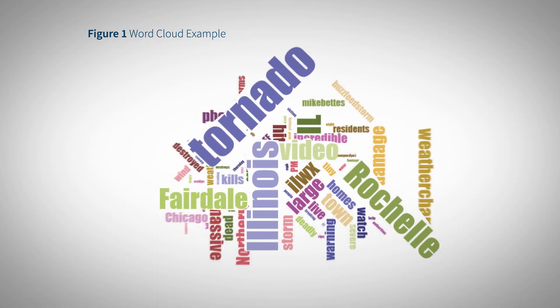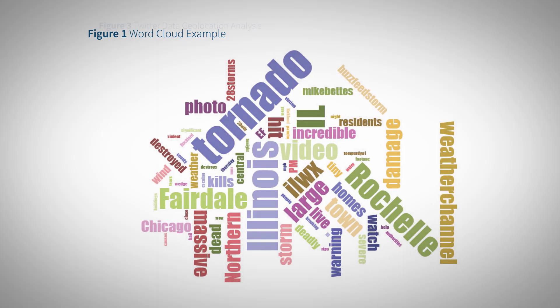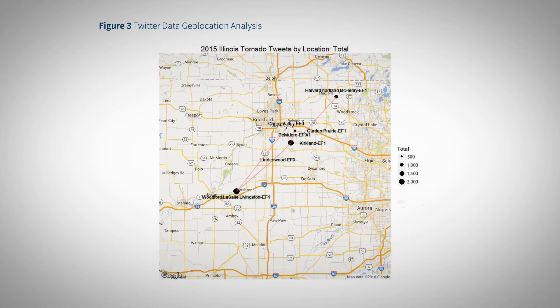The article focuses on the different forms of visualizing social network data, such as through word clouds and geolocation.